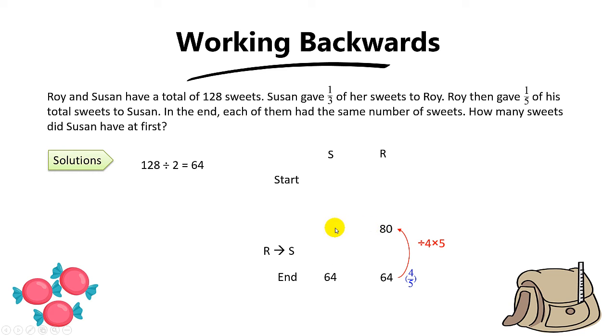Now, can you find Susan? You can. You simply take 128 minus 80. Remember, the total doesn't change. So when you take 128 minus 80, you get 48. And now you're going to work backwards for Susan.